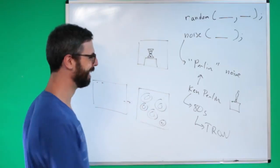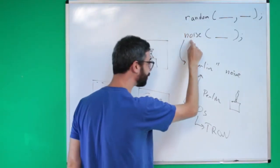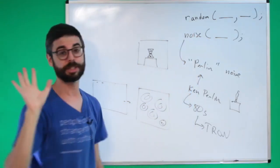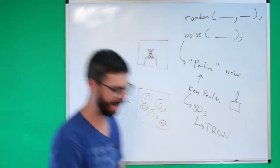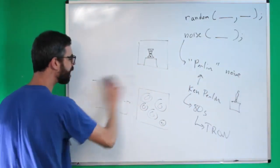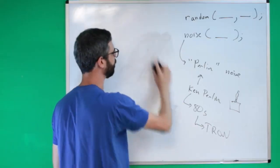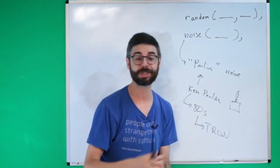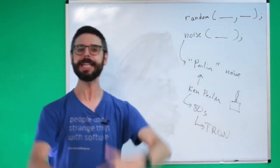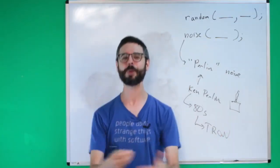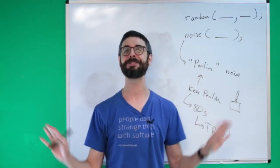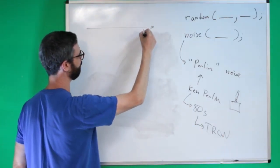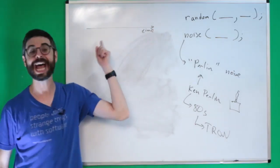Circling back — I mentioned there is a noise function and a random function. The noise function gives you Perlin noise values. I'm going to come back to the idea of procedural textures in part two when I look at two-dimensional Perlin noise. But in this particular video, I am just going to talk about one-dimensional Perlin noise. So, what do I mean by one-dimensional? Let's think about numbers in a single dimension. Let's just pretend for a moment that that dimension is time — this is the x-axis of time.